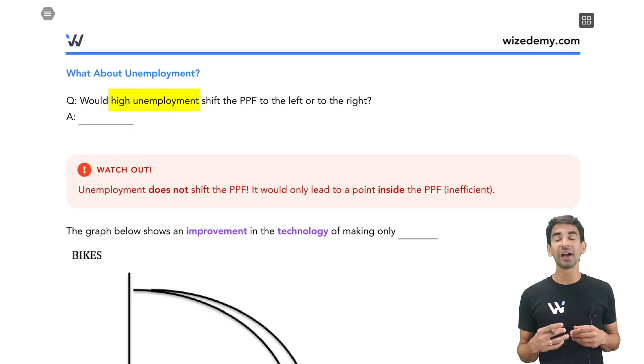What if I tell you that there is high unemployment? Do you think the PPF would shift left or do you think the PPF would shift right? Actually, that's a trick question. And the answer would be there is no shift. Because if there is high unemployment, is that a good thing or a bad thing? Well, unemployment means a lot of people not working. So that means that's a bad thing.